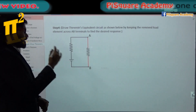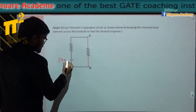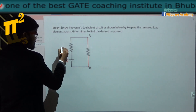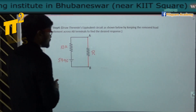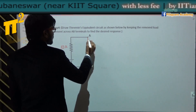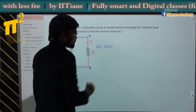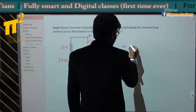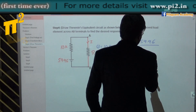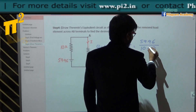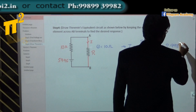Step 4: draw the Thevenin's equivalent. The voltage is 59.96 V, the Thevenin's resistance RTH is 10 ohms, and this is R. Now find current I. In the first case, R equals 10 ohms. The current I equals 59.96 divided by (10 + 10) — it's a simple series network — giving 2.998 amperes.